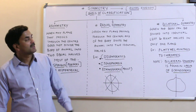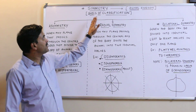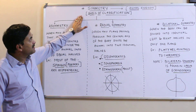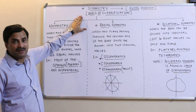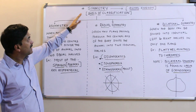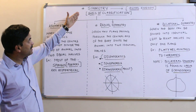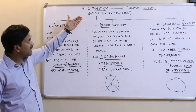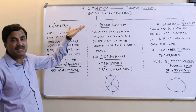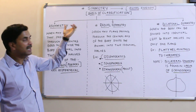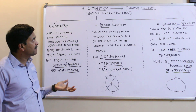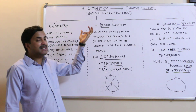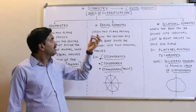Hello to all. Today we are going to study the symmetry found in various organisms. Symmetry is also used as the basis of classification in the animal kingdom, and there are basically three types of symmetry.